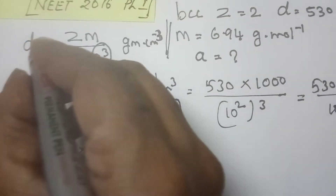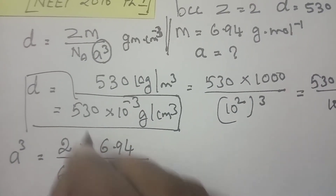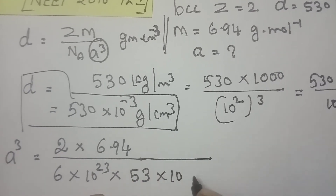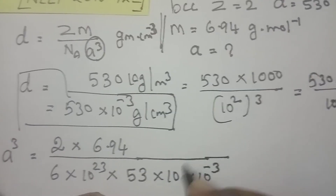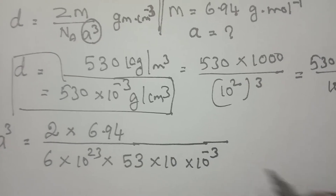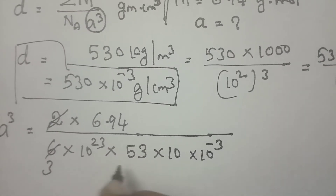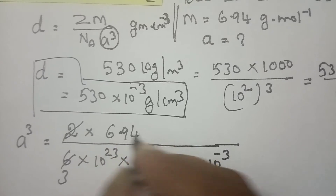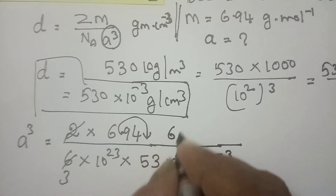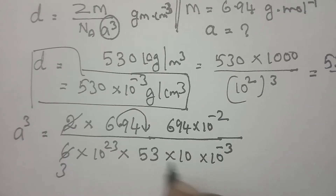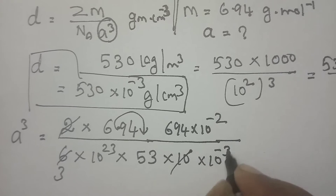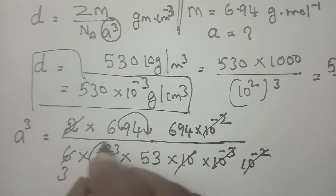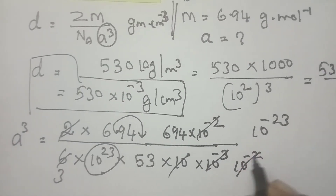Bringing the density into the denominator: 530×10⁻³ gram per centimeter cube. Now the 10⁻³ in the numerator and 10⁻³ from 6.94 expressed as 6.94×10⁻² cancel with parts of the denominator. The 10²³ in the denominator moves to the numerator as 10⁻²³. After simplification we have 6.94×10⁻²³ in the numerator, divided by 3 and 530 (approximately).